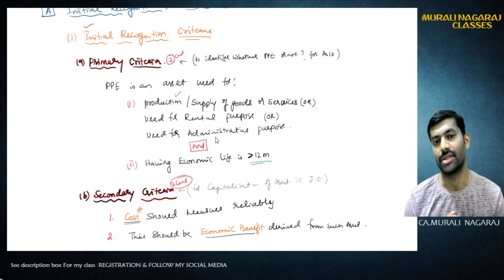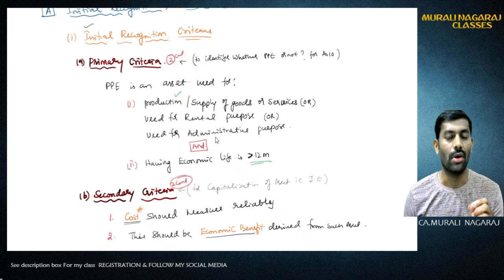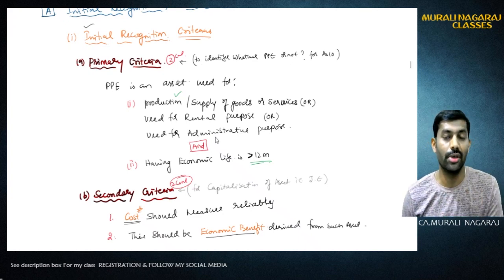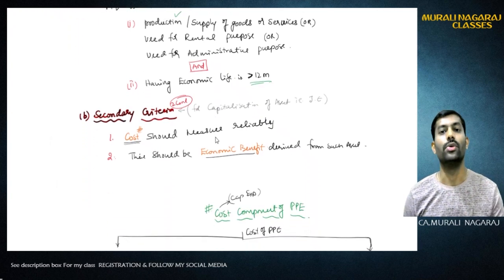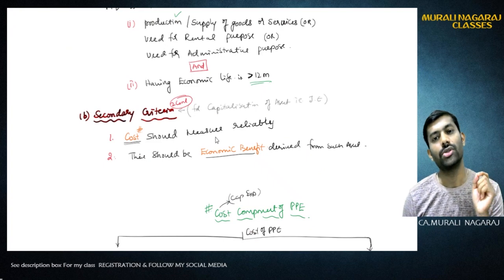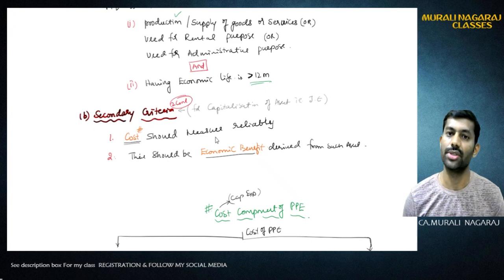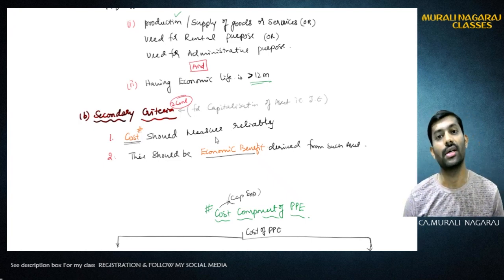Once you've established whether it is an asset or not, you then determine whether you need to capitalize it in the books of accounts. For that, there are two secondary conditions: first, the cost should be measured reliably, and second, there should be an economic benefit derived from such asset. If these two conditions are satisfied, then you can recognize it as an asset.